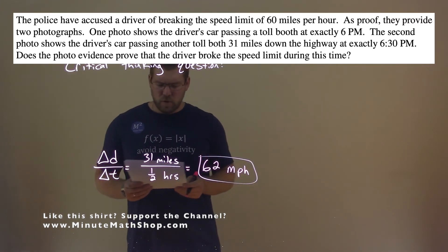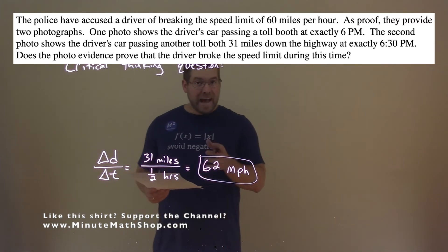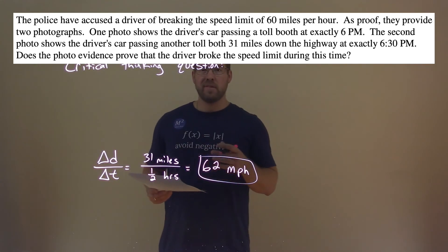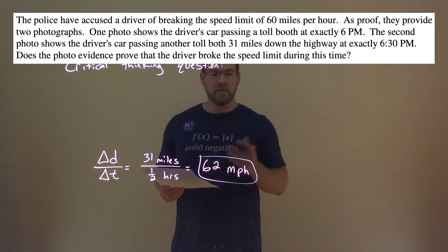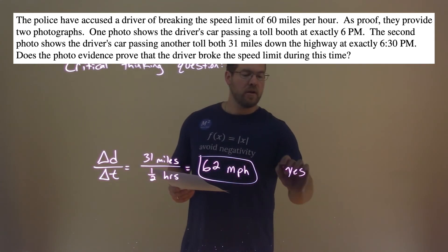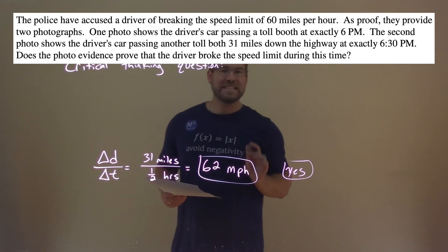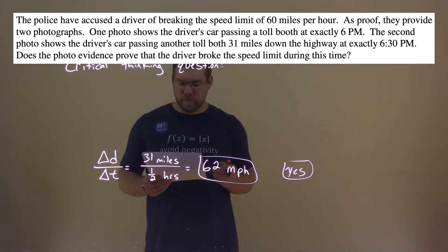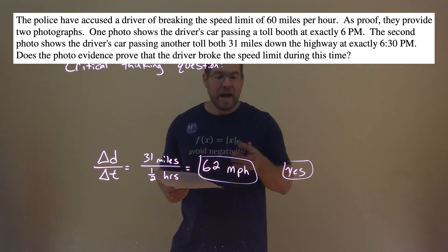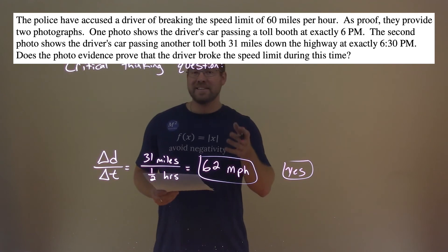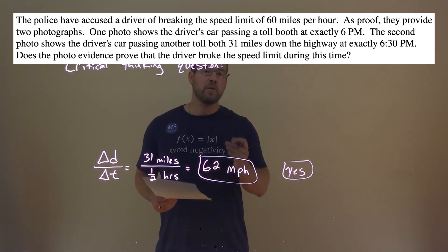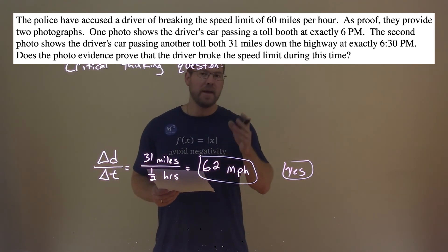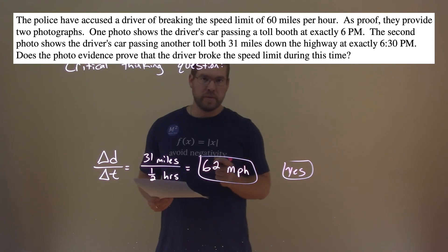So our motorist traveled an average speed of 62 miles per hour over this interval. Yes, the motorist did break the speed limit of 60 miles per hour. If the average was 62 miles per hour, at some point the motorist must have traveled over 60 miles per hour, and therefore broke the speed limit.